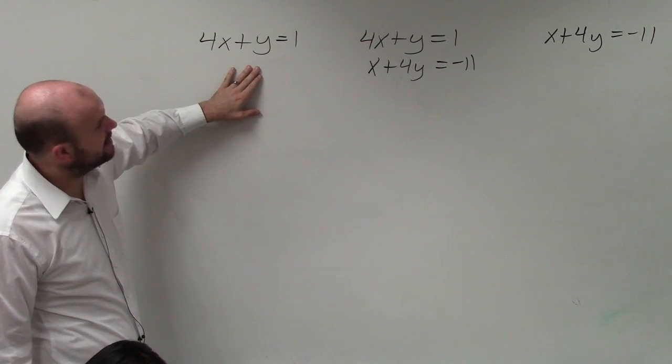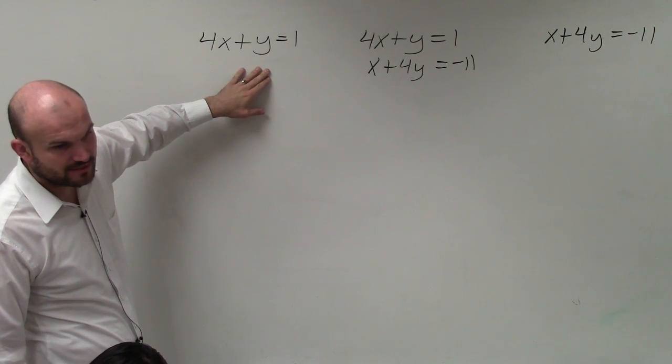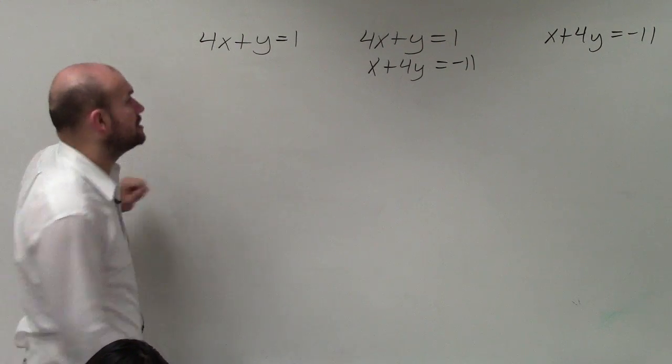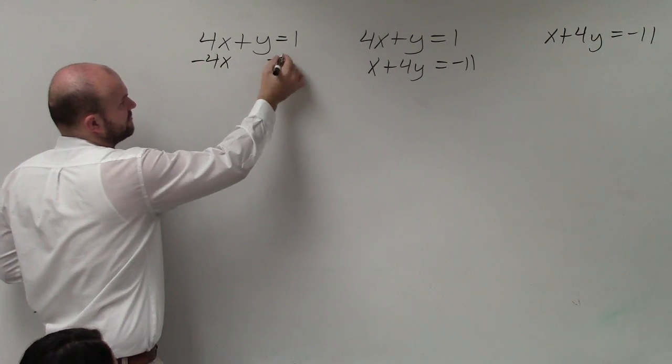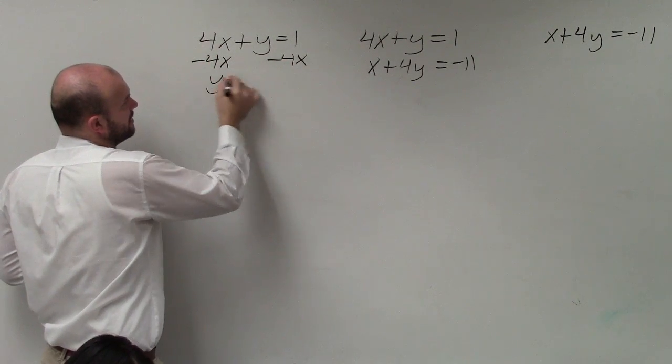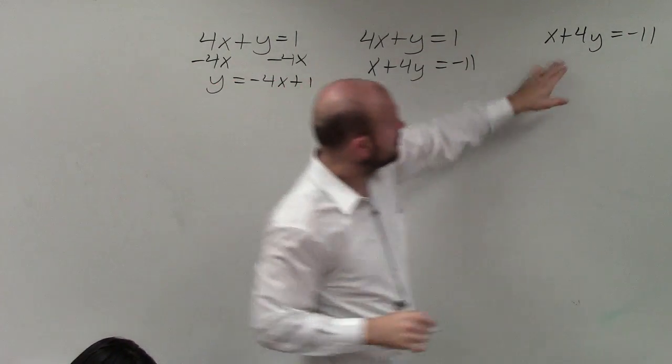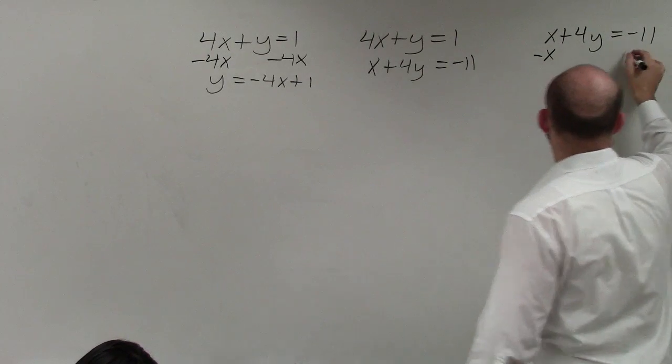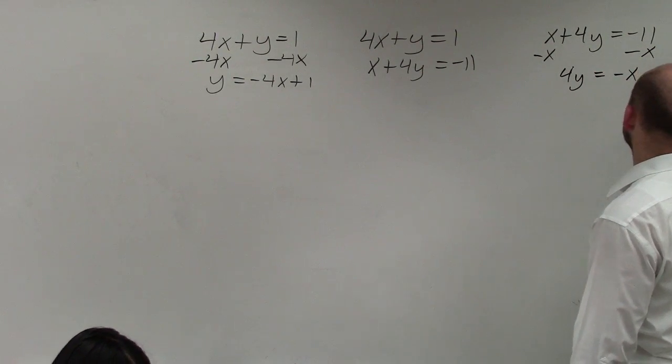So what we're going to do is I believe that rewriting these in slope intercept form would be the easiest method. So what I'm going to do is I'm going to solve for y in each case. So I'll subtract 4x on both sides. I get y equals negative 4x plus 1. Over here, I subtract an x, and I get 4y equals negative x minus 11.